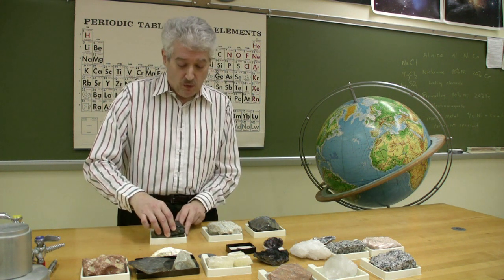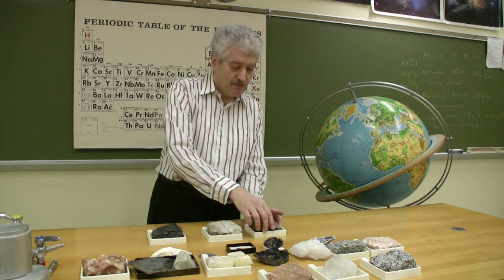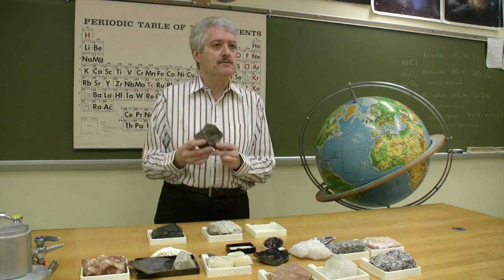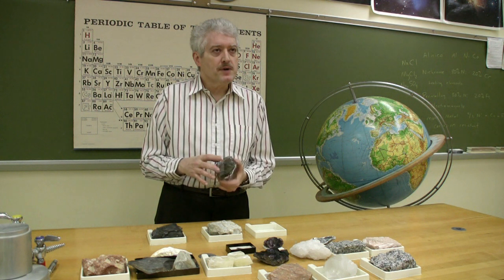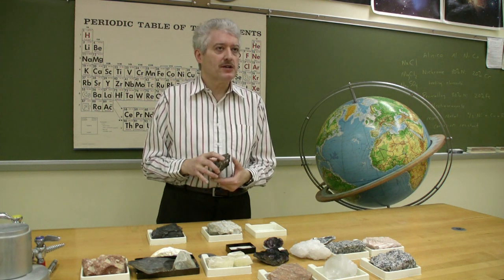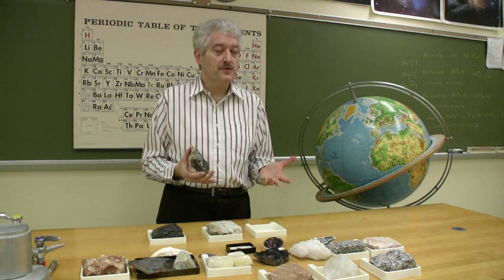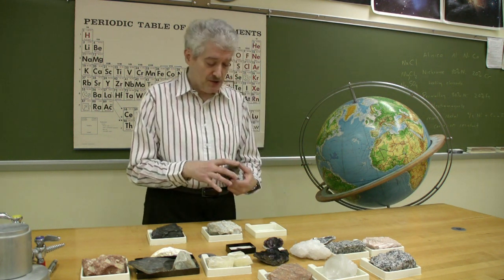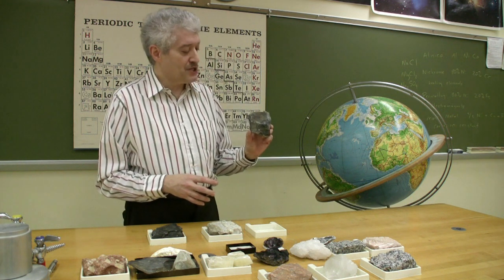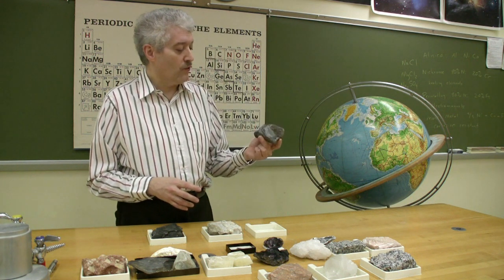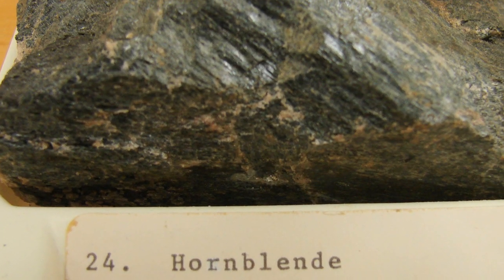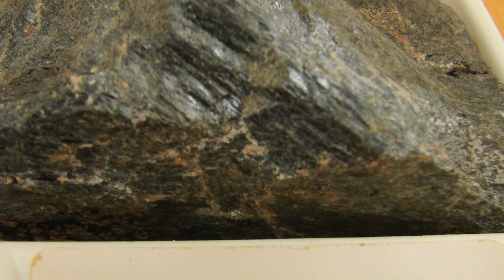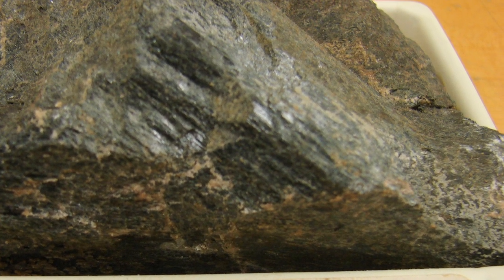One of the things that we find in basalt are dark silicate minerals. Silicate minerals contain silicon and oxygen — the most abundant group of minerals in the Earth's crust. This is an example, one of them called Hornblende. As you can see here, it's a fairly dark material, which makes sense given the color of basalt.